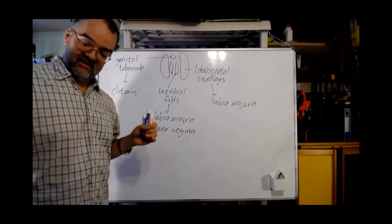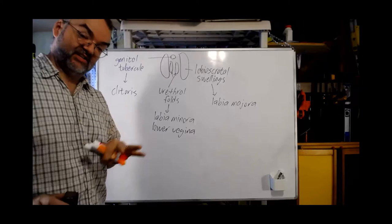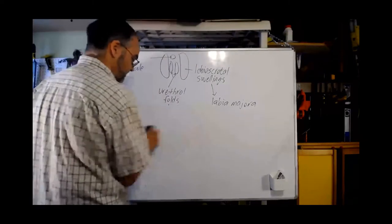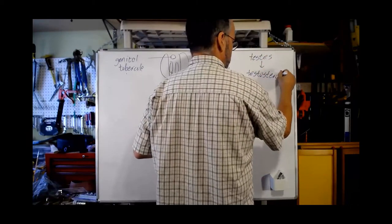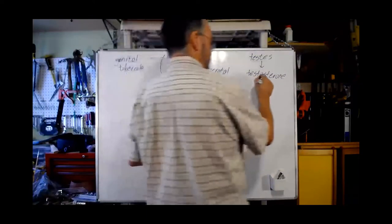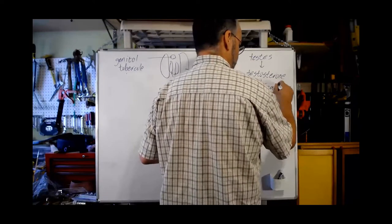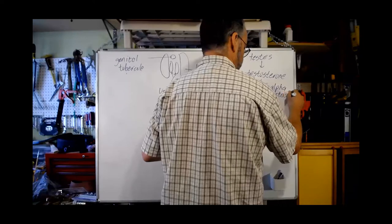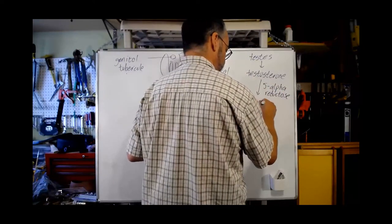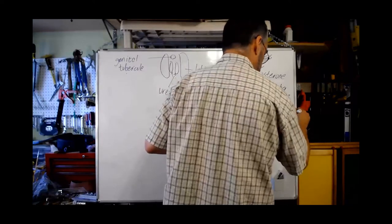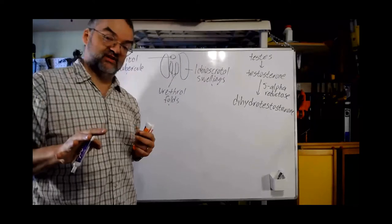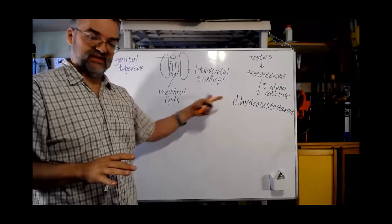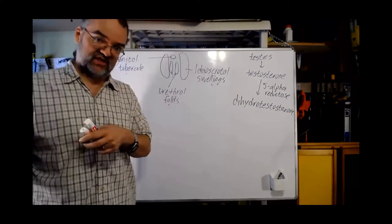However, if you have testes that are producing testosterone, and especially — some of that testosterone gets converted by an enzyme called 5-alpha-reductase into a version called dihydrotestosterone. Testosterone can have an effect on these structures, but dihydrotestosterone has a much, much stronger effect. Usually you have to have dihydrotestosterone to cause the full transformation of these into the male version of the genitals.